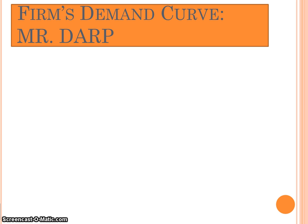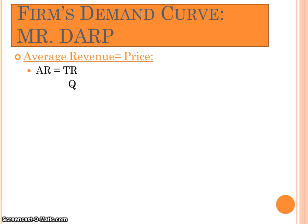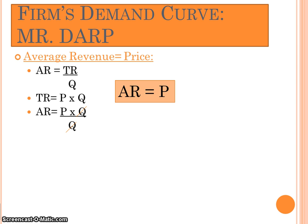Let's take a moment to prove that the demand curve is the same as marginal revenue, average revenue, and price. We know that average revenue equals price, and that average revenue is total revenue divided by quantity. Since total revenue is price times quantity, through substitution, average revenue equals price times quantity divided by quantity. Cancel out the quantities, and average revenue equals price.